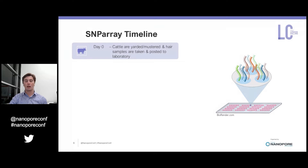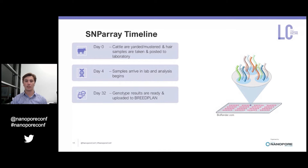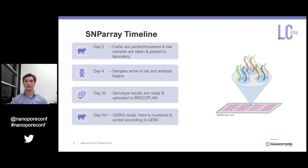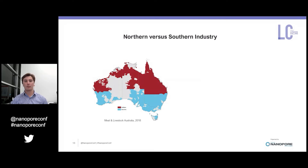A traditional SNP array pipeline looks something like this: at day zero a herd is mustered or yarded, hair samples are taken and posted to a lab. Those samples arrive in a lab, analysis begins, and after three to four weeks genotype results are ready. These results are then uploaded to a database such as BreedPlan, which has a bank of the reference population with known phenotypes and genotypes, allowing calculation of genomic estimated breeding values. After about six to eight weeks those GEBVs are ready and given back to the producer, who can yard their animals again and select according to GEBVs.